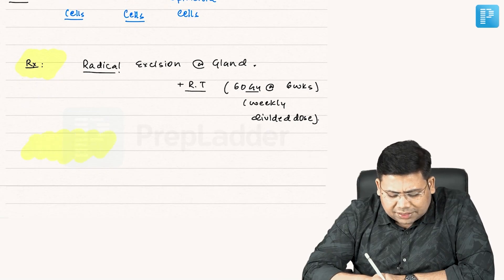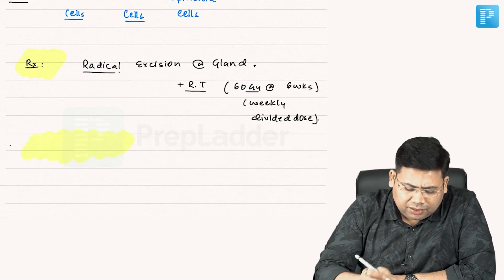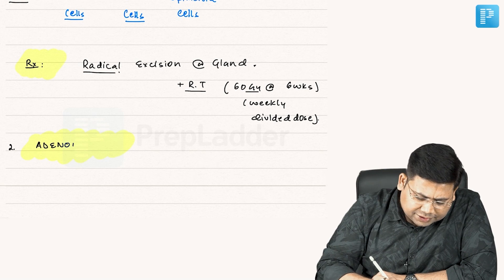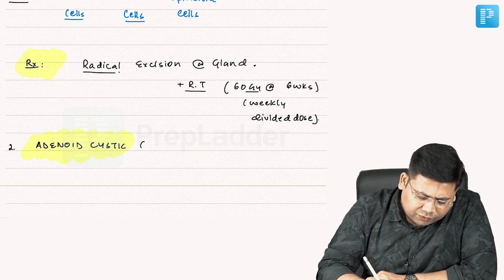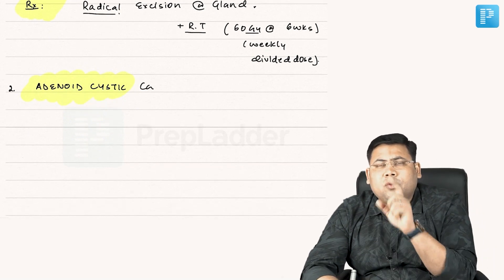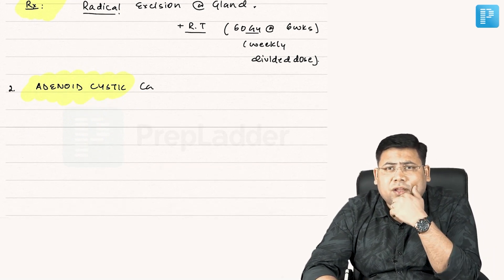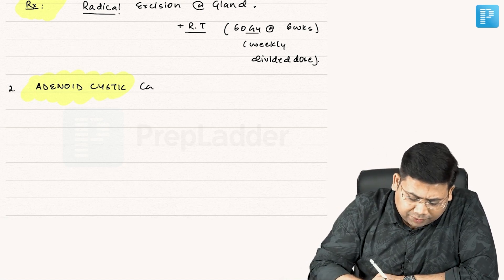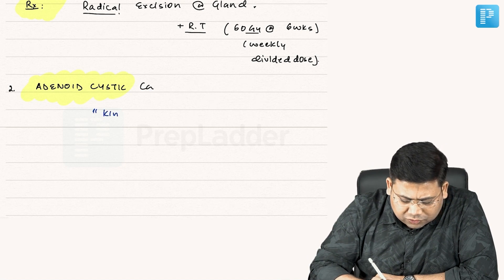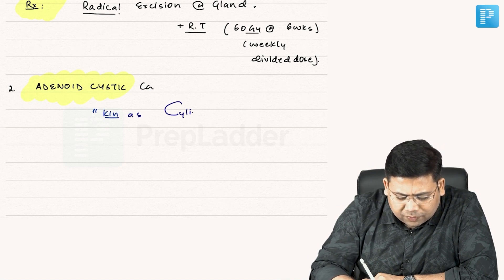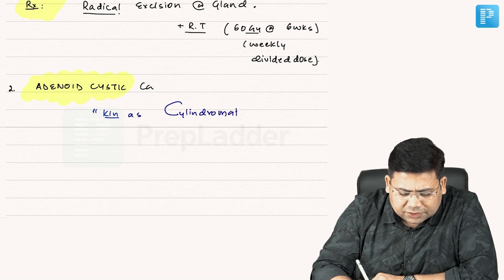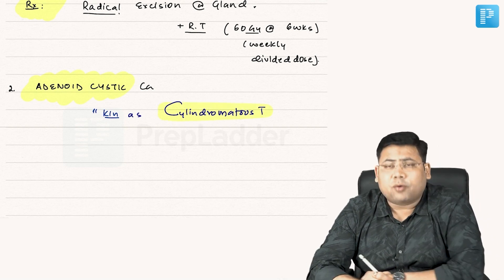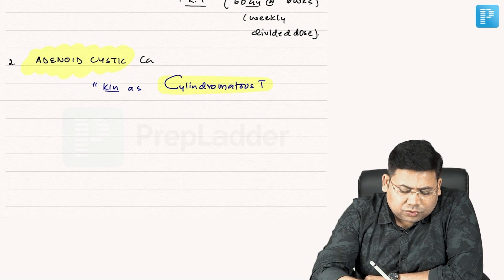The next tumor we are going to discuss is adenoid cystic carcinoma. This is a slow growing but very aggressive type of tumor. It is also known as the cylindromatous tumor. Let us understand the important points about this tumor.